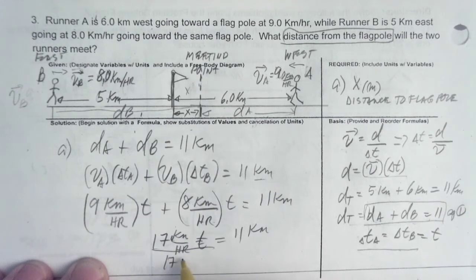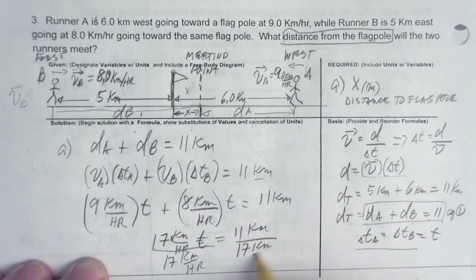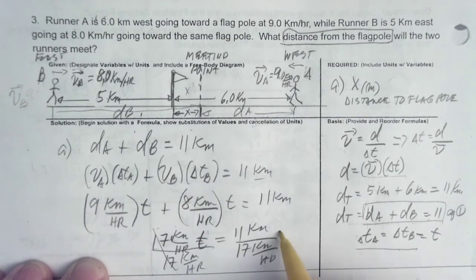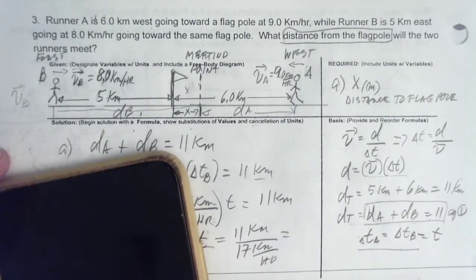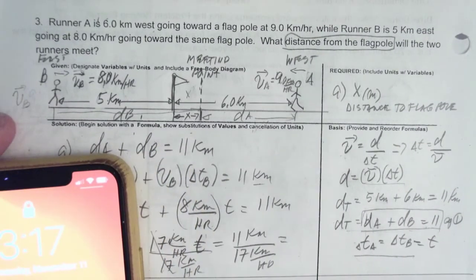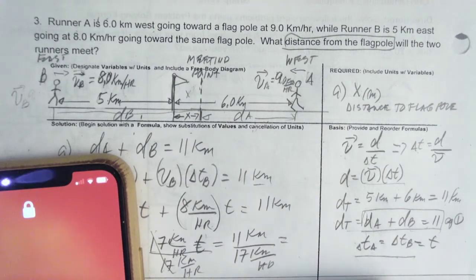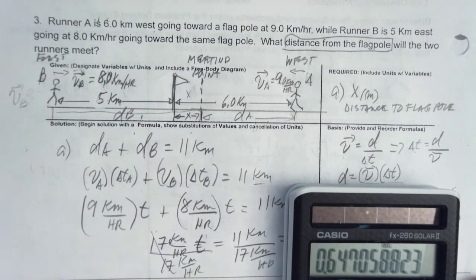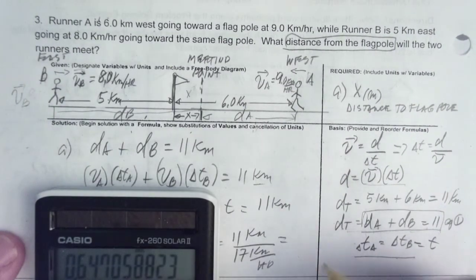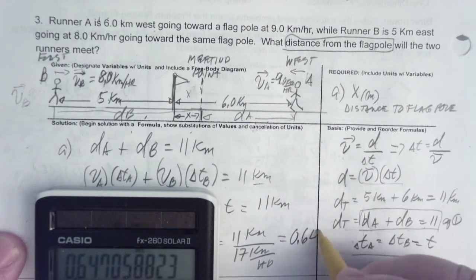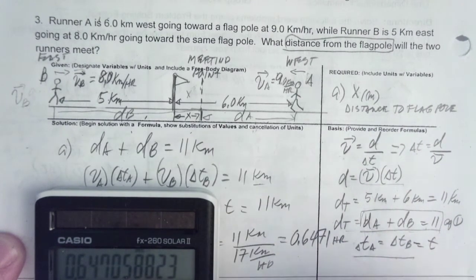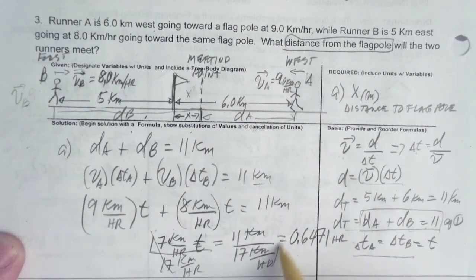If we divide both sides by 17, this cancels. And therefore, your T is equal to... how much is that? 11 divided by 17. So, be careful about rounding off. Remember that this is not the end of the problem. So, 0.6471 hours. Cancel, cancel. The unit is hours.